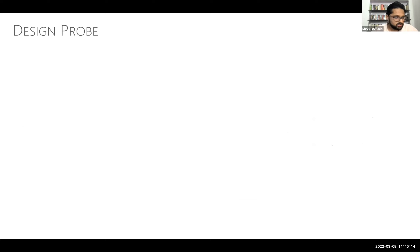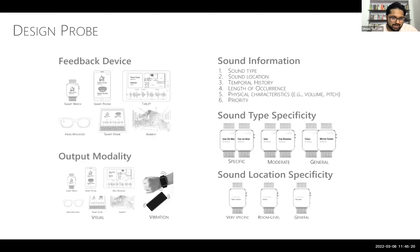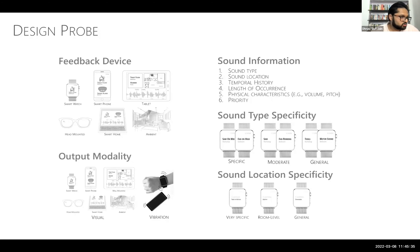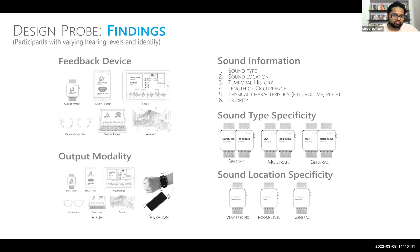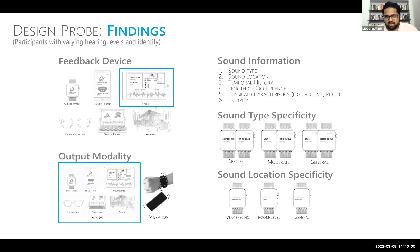Based on formative interviews, we narrowed down to five attributes in our design probe: the device to provide feedback on, the output modality such as visual or vibration, and the type of sound information people would want. We found that participants preferred tablets for feedback, visual as the output modality, and preferred sound type, sound location, and temporal history as the kinds of sound information they'd want.